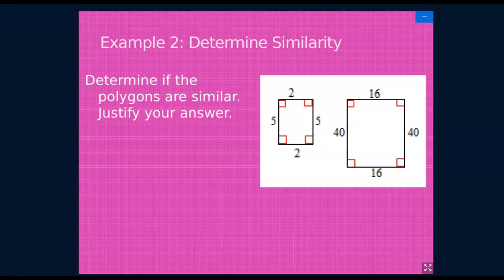Determine if the polygons are similar. Justify your answer. We have the polygon on the left whose ratios of its sides would be 2 to 5, and then we have the polygon on the right whose ratios are 16 to 40. In order to compare them, we need to reduce them to their simplest form. So 2 to 5 is already reduced, but 16 and 40 both divide by 8, so you divide both by 8 and you get 2 to 5. Since 16 over 40 reduces to 2 to 5, then these are similar polygons.